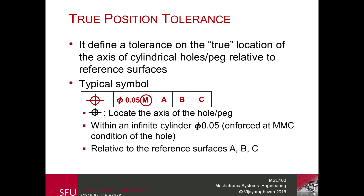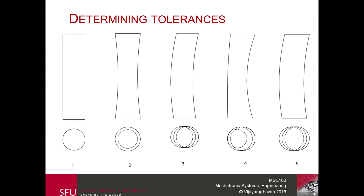The three letters A, B, and C denote the reference surfaces used to constrain our axis. A is typically chosen to be perpendicular to the axis of the hole or peg. The order of the second and third references B and C is not critical, but the first reference must be a surface whose normal defines the axis of the hole.